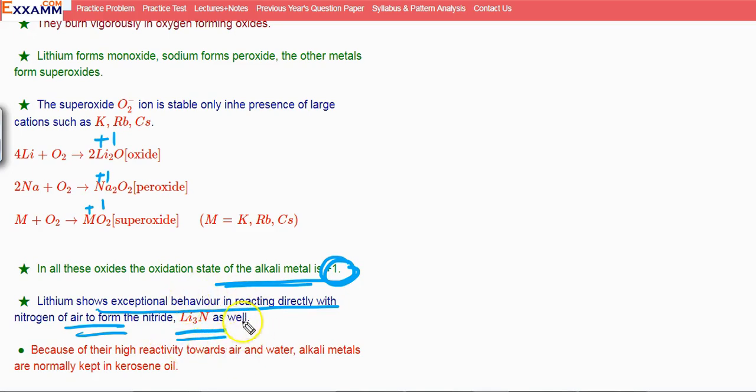Now because of their high reactivity towards air and water, alkali metals are kept in kerosene oil. In labs, sodium and others are always kept in kerosene oil. As soon as sodium comes in contact with even a drop of water, fire starts immediately. So they are so reactive that they have to be preserved properly and are kept in kerosene oil.